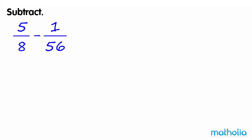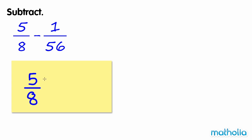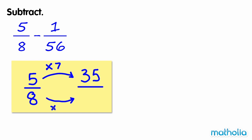Subtract. Find 5 eighths minus 1 fifty-sixth. Let's find an equivalent fraction of 5 eighths that has a denominator of 56. 5 eighths equals 35 fifty-sixths.